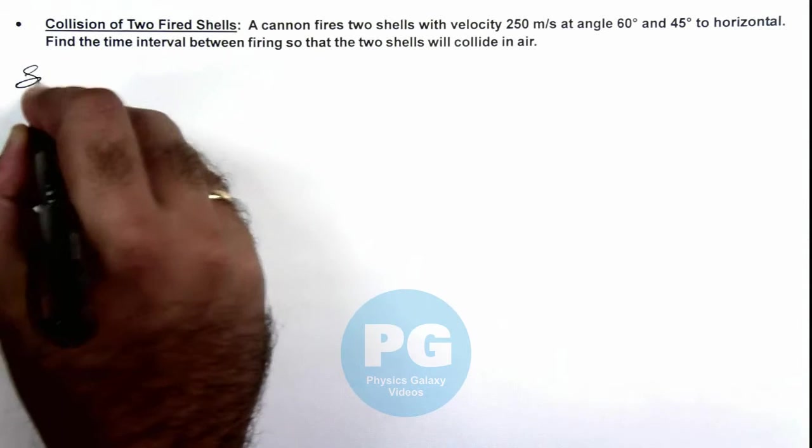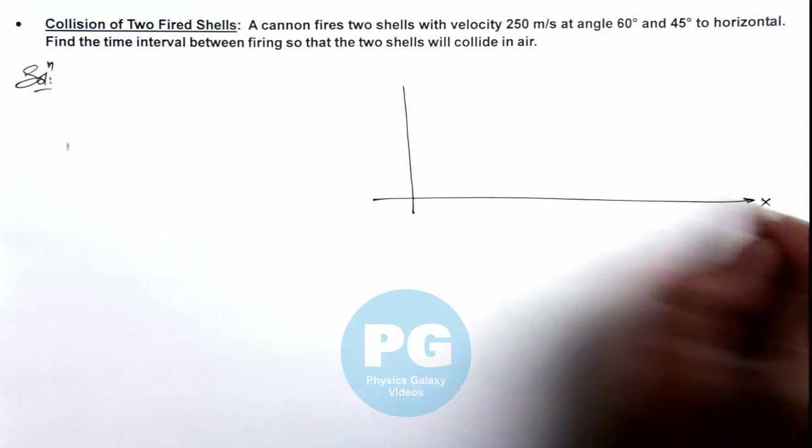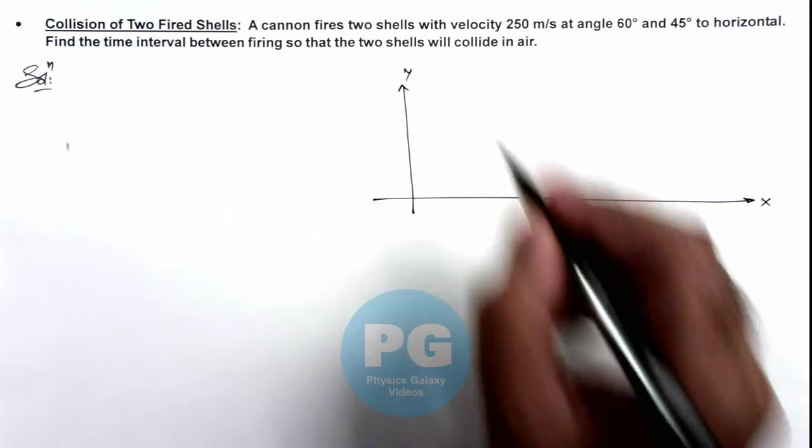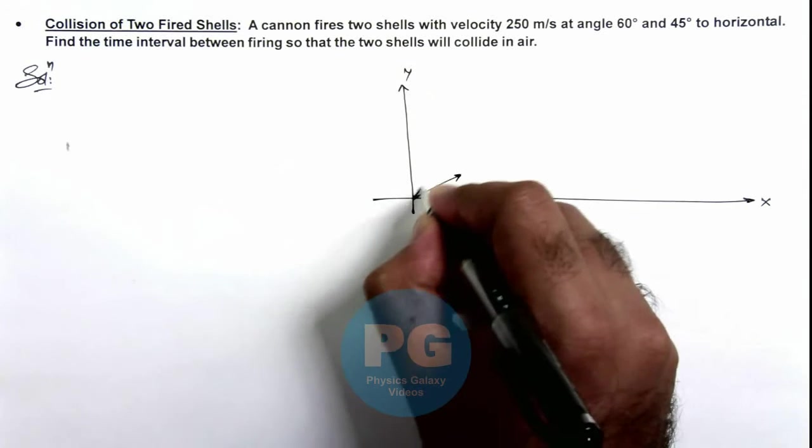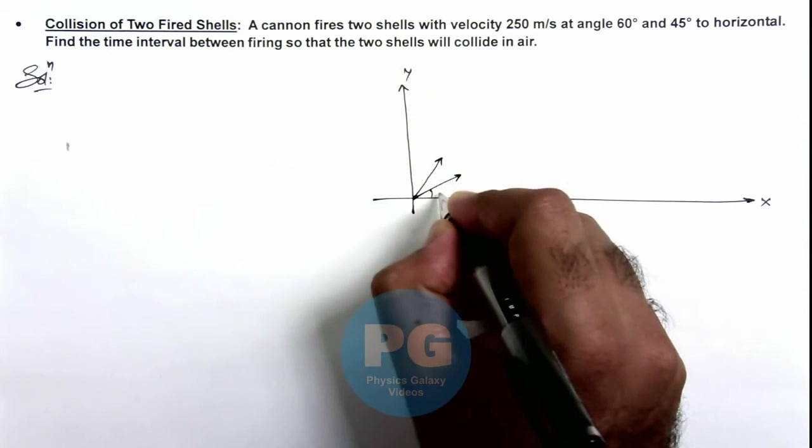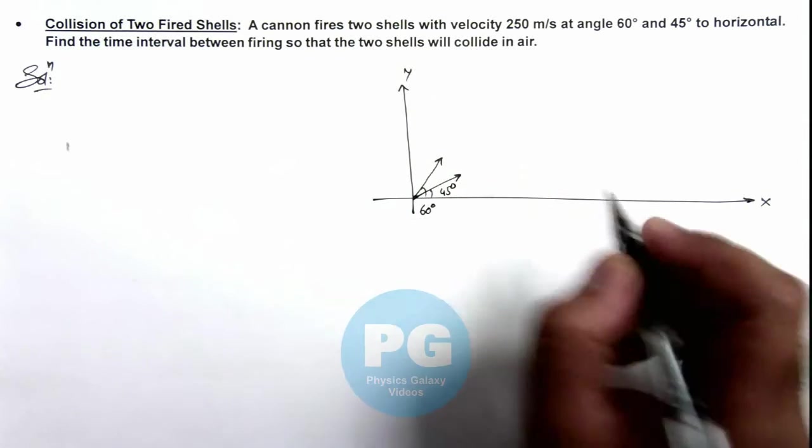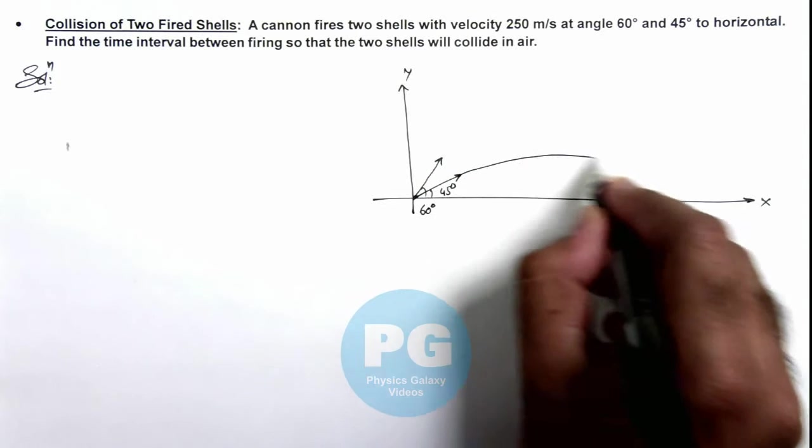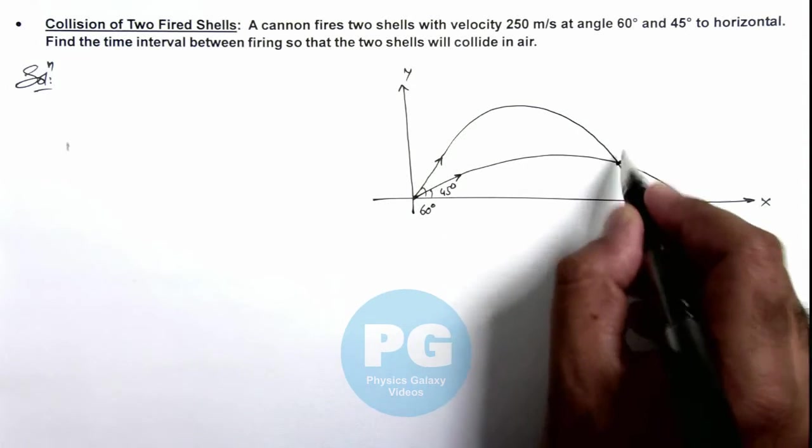If we draw the situation here with x-y coordinate system, a cannon fires from the initial point two shells at angles 45 degrees and 60 degrees to the horizontal. In this situation, their trajectories intersect at this point P.